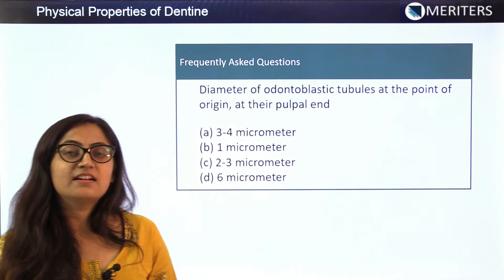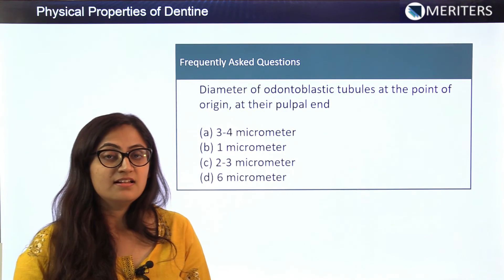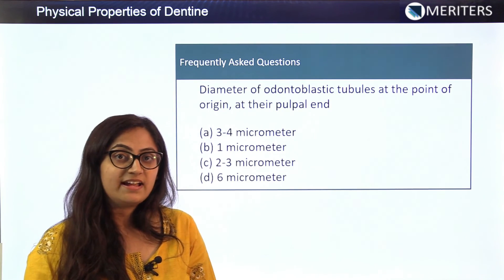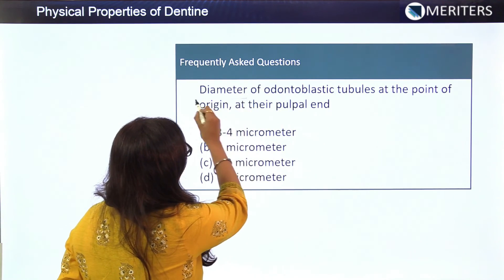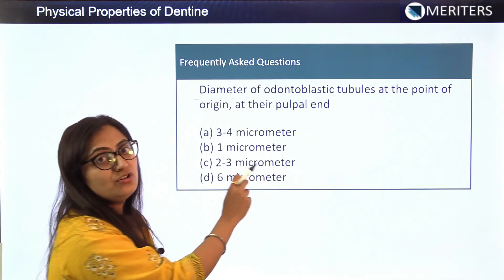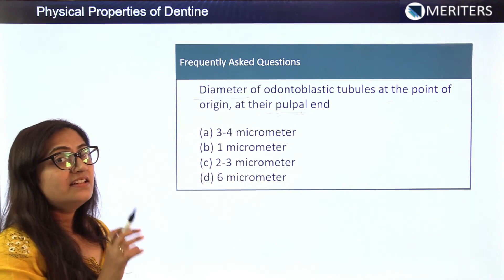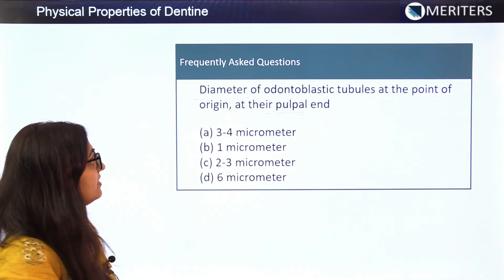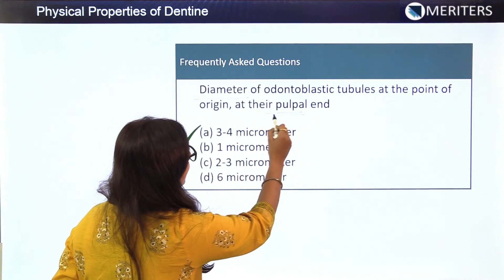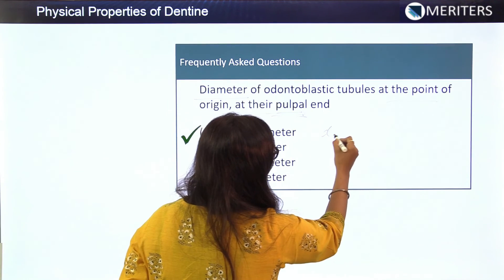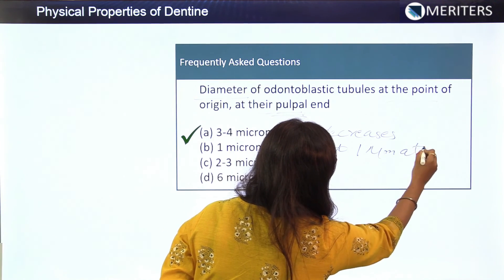Another very frequently asked question concerns the diameter of the odontoblastic tubules. The key word to mark is 'pulpal end.' The diameter of the odontoblastic tubules at their pulpal end is 3 to 4 micrometers, which decreases to 1 micrometer at the external end. This is a direct factual question from the standard textbook.